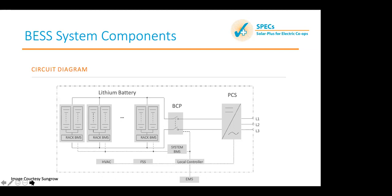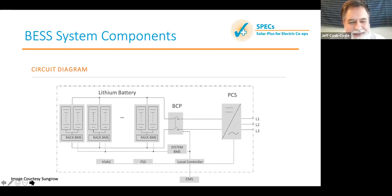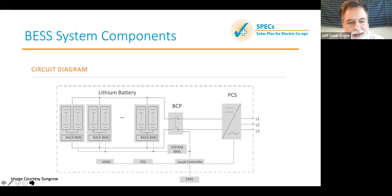Sarah asked for a reminder of the acronyms. HVAC is the heating and cooling system, which is an essential part of the battery system. FSS is the fire suppression system. EMS is a secondary control system. The system BMS is the battery management system, which controls the batteries. The gray boxes on the left are battery racks, and they too have an internal control system.